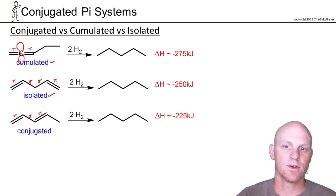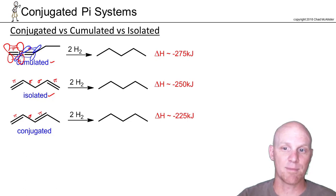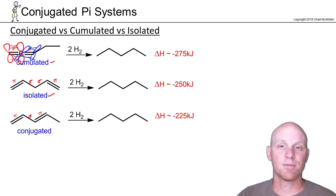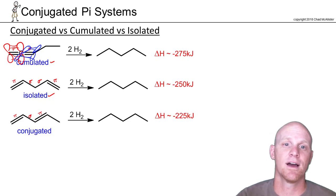If we're using these p orbitals in one case, then to make this adjacent bond we'd have to be using p orbitals in the horizontal plane to get that pi bond. So these are just in totally different planes, but their proximity does raise the energy a little bit due to some increased electron density.